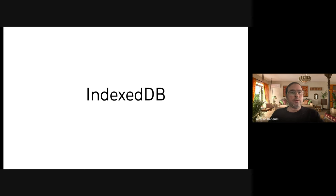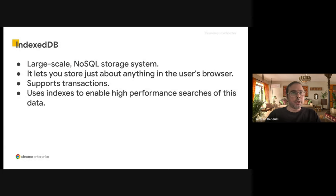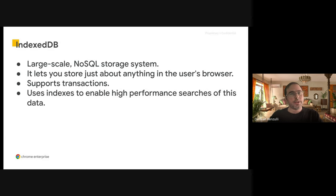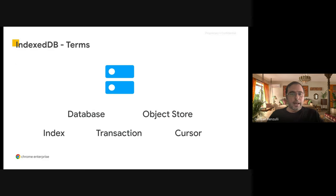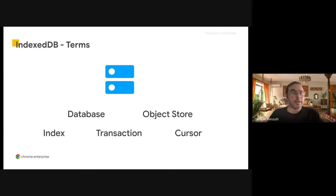Let's now move to the second recommended technology, which is IndexedDB. IndexedDB is actually more complex than the Cache API. While the Cache API is mostly a key-value pair map, IndexedDB is a large-scale NoSQL storage system. The database allows you to store almost anything, and it supports transactions and indexes to make everything more performant. It's an actual mini database on the client side. With IndexedDB, you manage different components: you create a database, you create object stores — which are like tables — and you have indexes, transactions, and cursors. Many of the features you might use in other databases are available in IndexedDB as well.